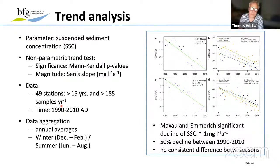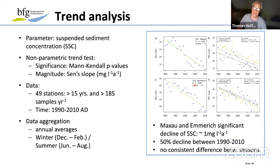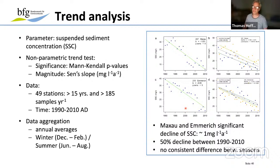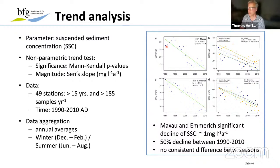Looking at two stations along the Rhine — Maxau in the upper Rhine and Emmerich close to the Dutch-German border — you can see the annual average suspended sediment concentration in milligrams per liter is decreasing from 1990 to 2010. For both stations, the decline is around 1 milligram per liter per year. Given that the original concentration is around 30 to 40 milligrams per liter, this represents a 50 percent decline in suspended sediment concentration over 20 years.